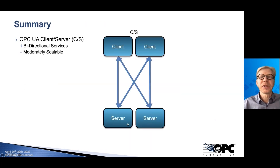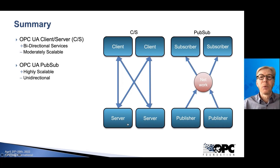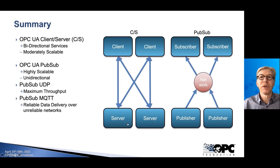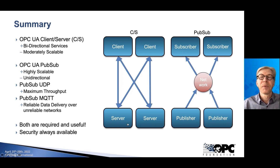As a summary, OPC UA client-server has bidirectional services that stand out, but it's only moderately scalable. The PubSub model enables better scalability, but so far only provides unidirectional communication. We have the UDP version, which provides maximum data throughput, and MQTT, which is very flexible on less reliable networks and for delivery to the cloud especially. But both are required, both are useful, and security is always available — so you have all the options that you need. I hope with this presentation you got a better understanding of the differences between these crucial technologies. Thank you.